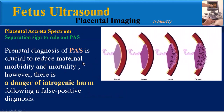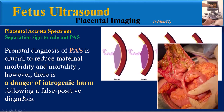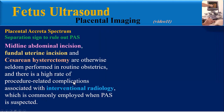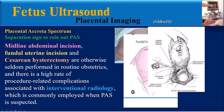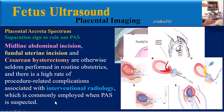Prenatal diagnosis of Placenta Accreta Spectrum is crucial to reduce maternal morbidity and mortality. However, there is a danger of iatrogenic harm following a false positive diagnosis, such as bowel perforation, midline abdominal incision, fundal uterine incision, and caesarean hysterectomy — procedures otherwise seldom performed in routine obstetrics. There is also a high rate of procedure-related complications associated with interventional radiology, which is commonly employed when PAS is suspected.